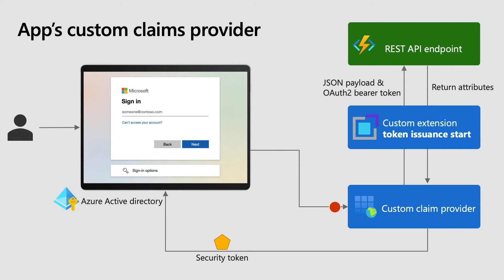The Azure Active Directory custom extension sends an HTTP request to a REST API endpoint you own. The request contains information about the event, the user, and other context information. Using the data sent by Azure Active Directory — for example, the user's unique identifier — the REST API retrieves attributes from external data sources and returns them back to Azure Active Directory. Based on the Custom Claims Provider settings, selected attributes are added into the token that will be returned to the application. The application can now read the claims from the security token and react accordingly.